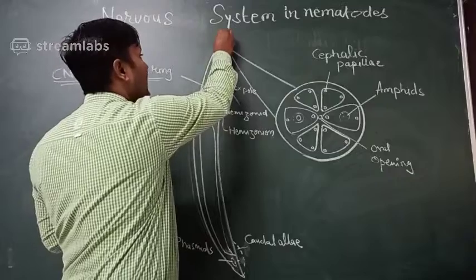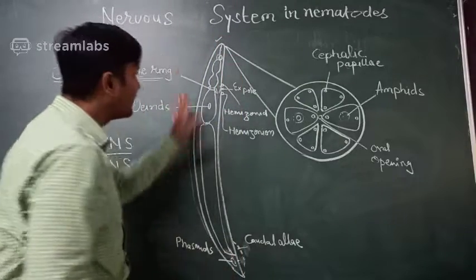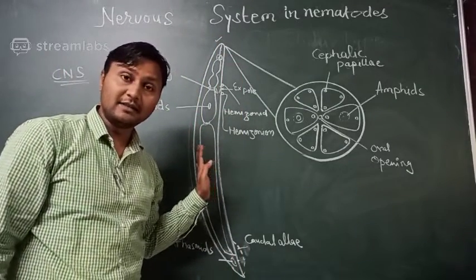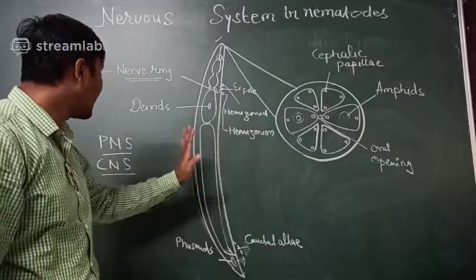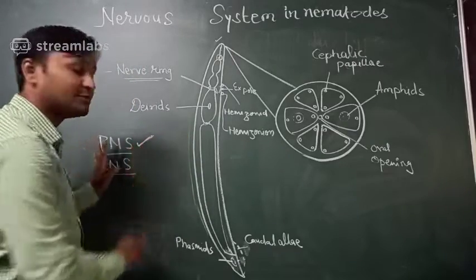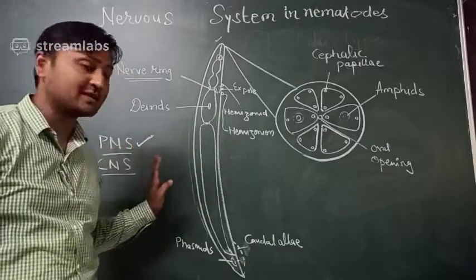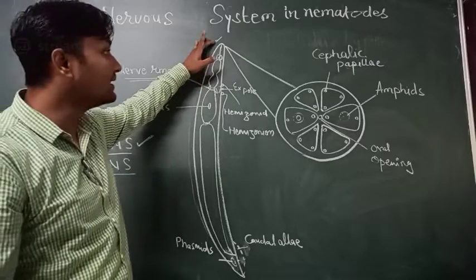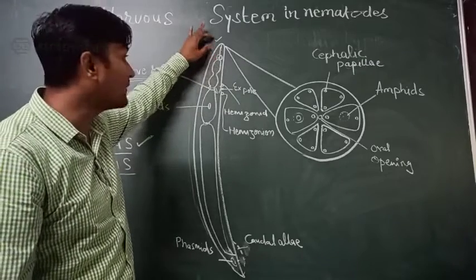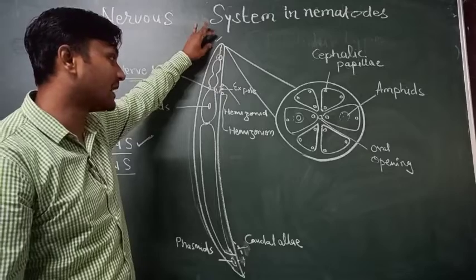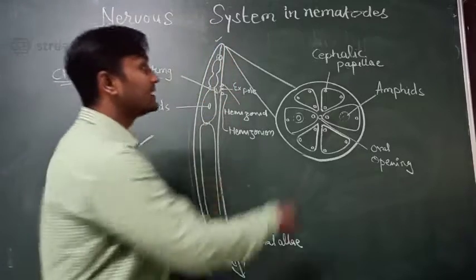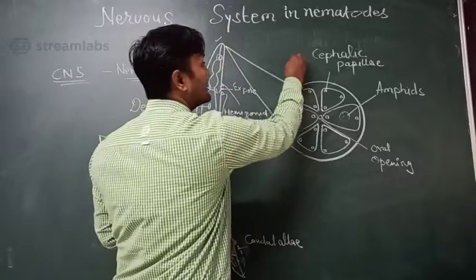All different sensory organs from head to tail are part of the peripheral nervous system. It starts with the cephalic region, which has 16 papillae.